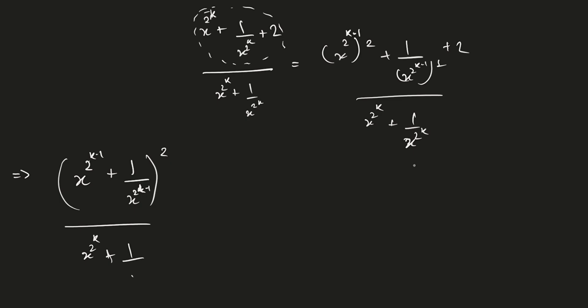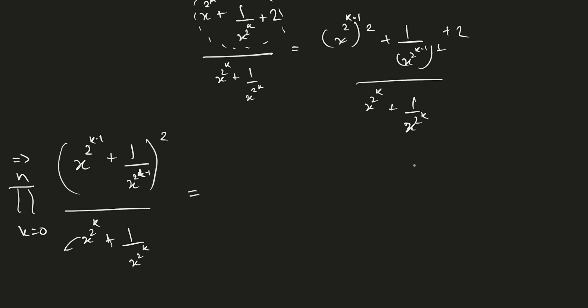Now I'll be doing the cancellations — it is π, k equals 0 to n. As you can see, only one power of these terms in the numerator will get cancelled off, and the whole denominator will be cancelled out by the next terms. The term that doesn't have a next term is the last term, so in the denominator I'll only be left with x^(2^n) + 1/x^(2^n).